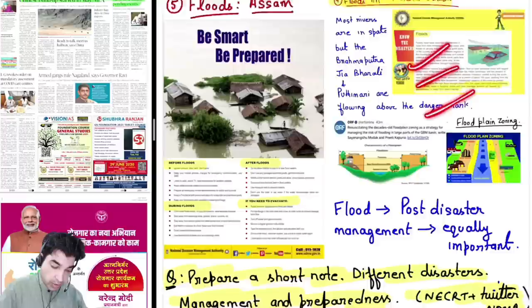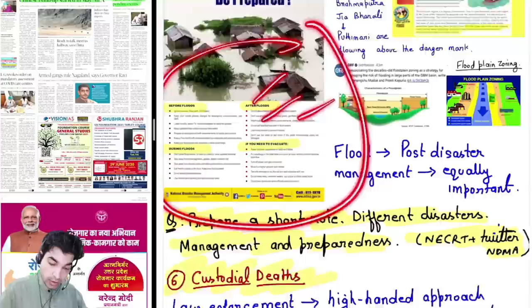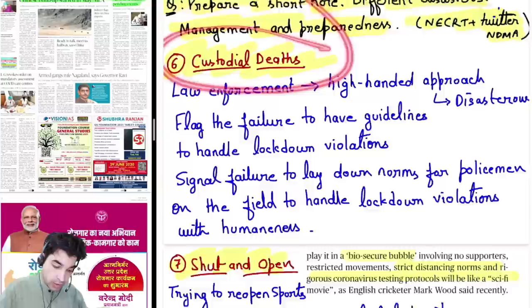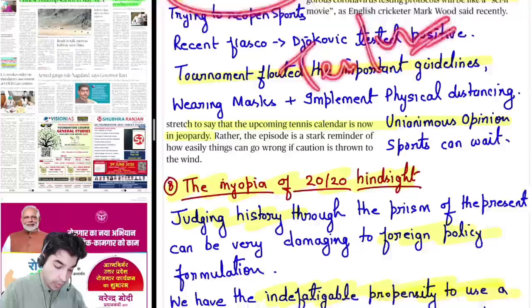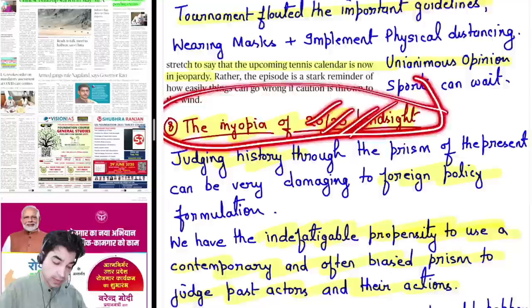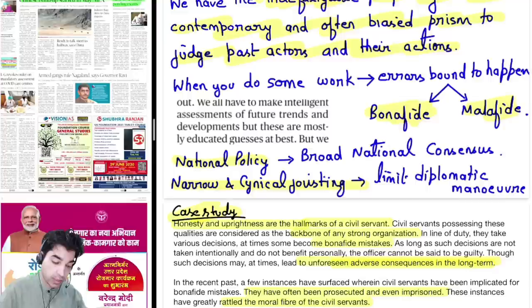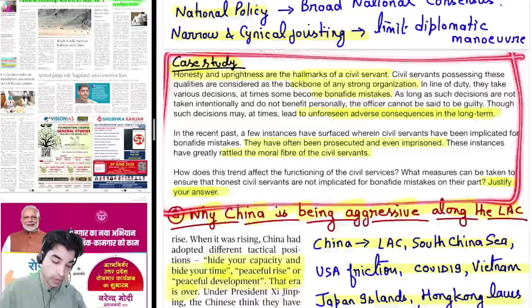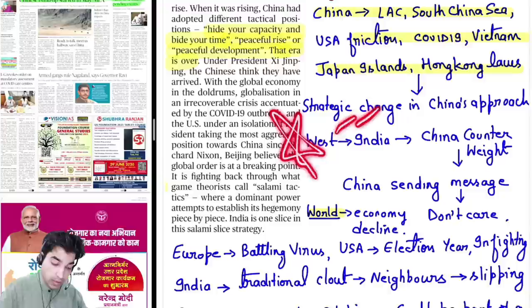The fourth topic is Garib Kalyan Rojgaar Abhiyan. Fifth, we will discuss floods — how floods happen and what guidelines the NDMA has issued — and we will prepare a short note. Sixth is about custodial death. Seventh is Shut and Open — discussing tennis and different sports tournaments. Eighth is about the myopia of 2020 hindsight — judging the past is easy but we should be careful. We will also solve an ethics case study today.